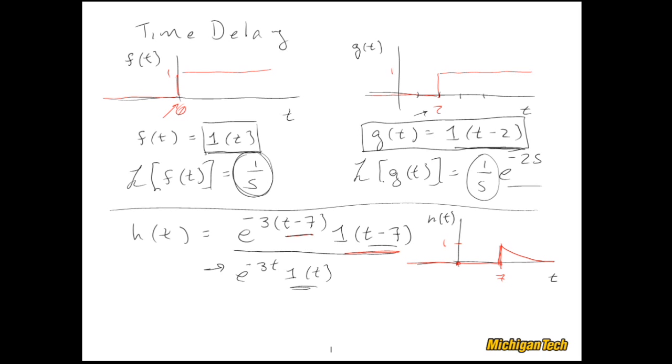So let's go ahead and calculate h(s). I take the Laplace transform of the undelayed function and that would be 1/(s+3), and then I key off of this and multiply it by e^(-7s). Done.